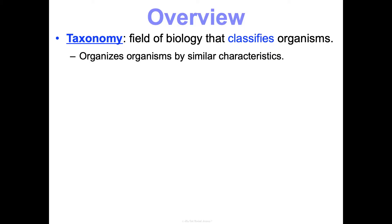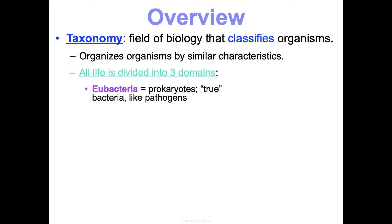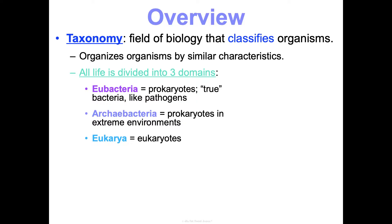Taxonomy organizes organisms by similar characteristics, and taxonomy currently has all life divided into three domains. There are eubacteria, which are your prokaryotes — what you think of as true bacteria, like pathogens, which are disease-causing bacteria. You have your archaea bacteria, which are a really unique category of prokaryotes that live in extreme environments. And then you have eukarya, which are all eukaryotic organisms.